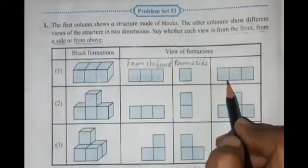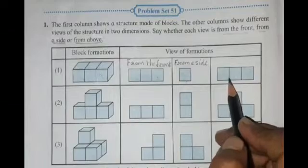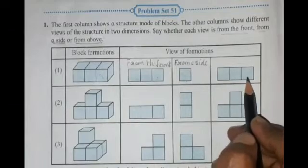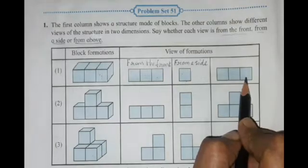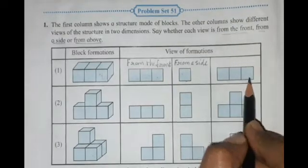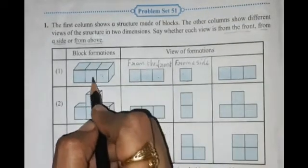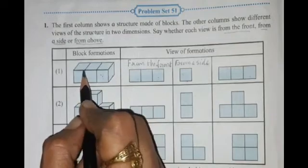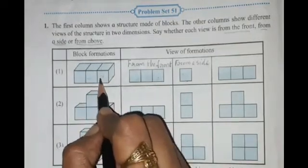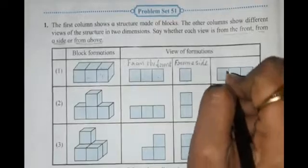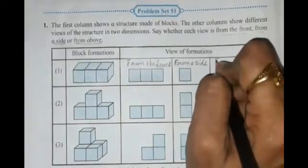The next view shows 1, 2 and 3 blocks. We can see these 3 blocks both from the front and from above. Since we already wrote 'from the front,' we write here 'from above.'